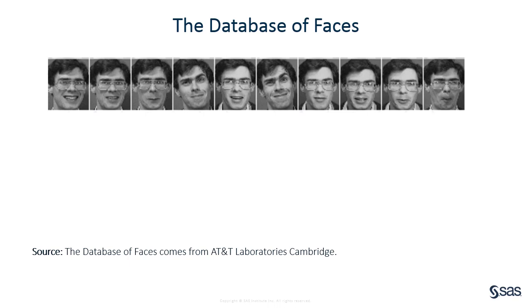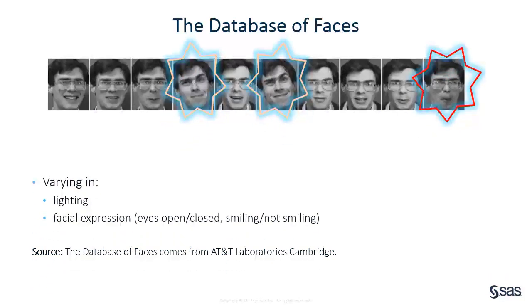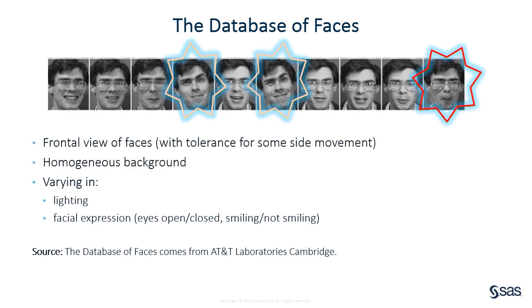We use the ORL face database for demonstration. The dataset consists of 400 images of 40 people, 10 from each person. The images were taken at different times, varying the lighting condition and facial expression, like open or closed eyes, with glasses or not, smiling, not smiling, or making funny faces. These faces are all in an upright position in front of you, with slight rotation to left or right, and they are all taken against a dark, homogeneous background.